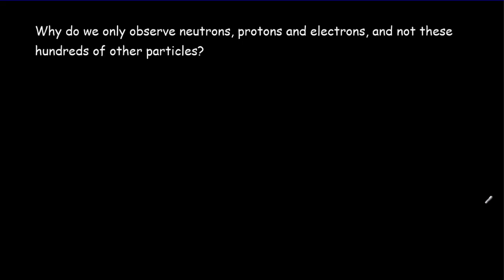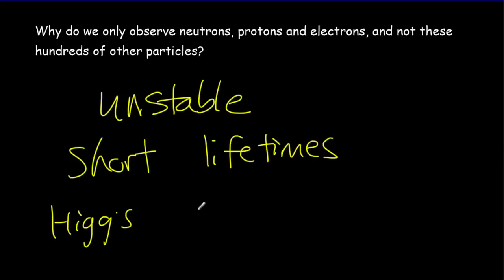The answer is very simple. These other particles are unstable. That means they have very short lifetimes. The lifetime of a Higgs particle is predicted to be about 1.6 times 10 to the minus 22 seconds.